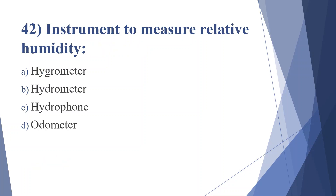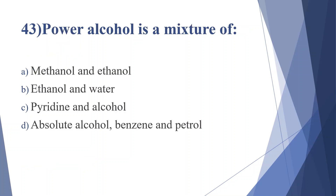Forty-second question: instrument to measure relative humidity — option A: hygrometer, option B: hydrometer, option C: hydrophone, option D: odometer. Answer is option A, hygrometer.